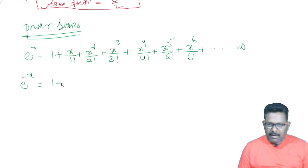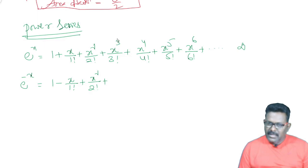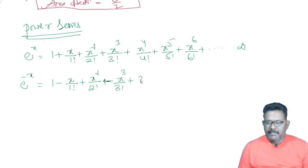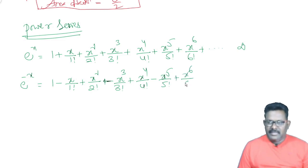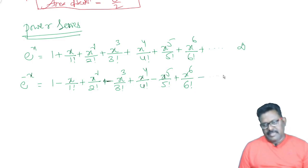Substituting minus x: e to the power minus x equals 1 minus x by 1 factorial plus x squared by 2 factorial minus x cubed by 3 factorial plus x to the power 4 by 4 factorial minus x to the power 5 by 5 factorial plus x to the power 6 by 6 factorial, and so on.